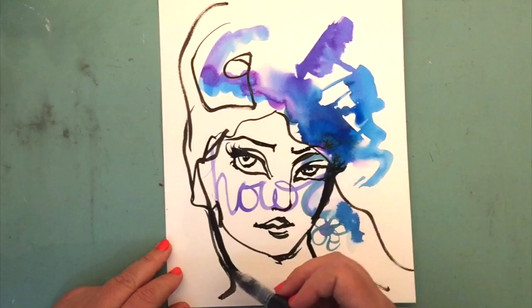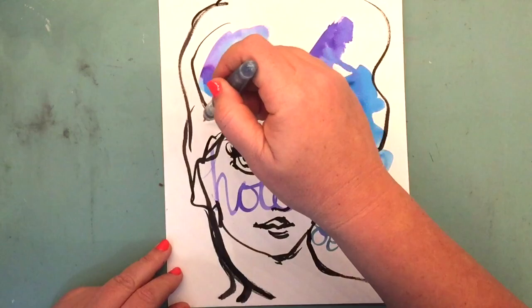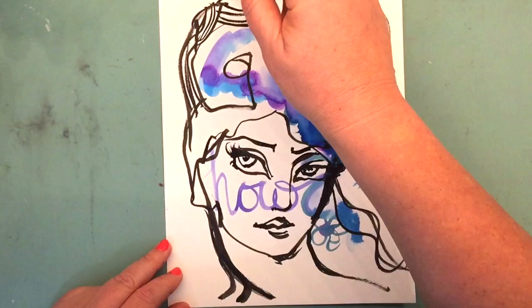My favorite is the Pentel Aquash. There are three sizes. I like to use the broad, which is the largest of them, for my watercolor. So I fill that with water and that's what I take out and about with me with my watercolor sets.